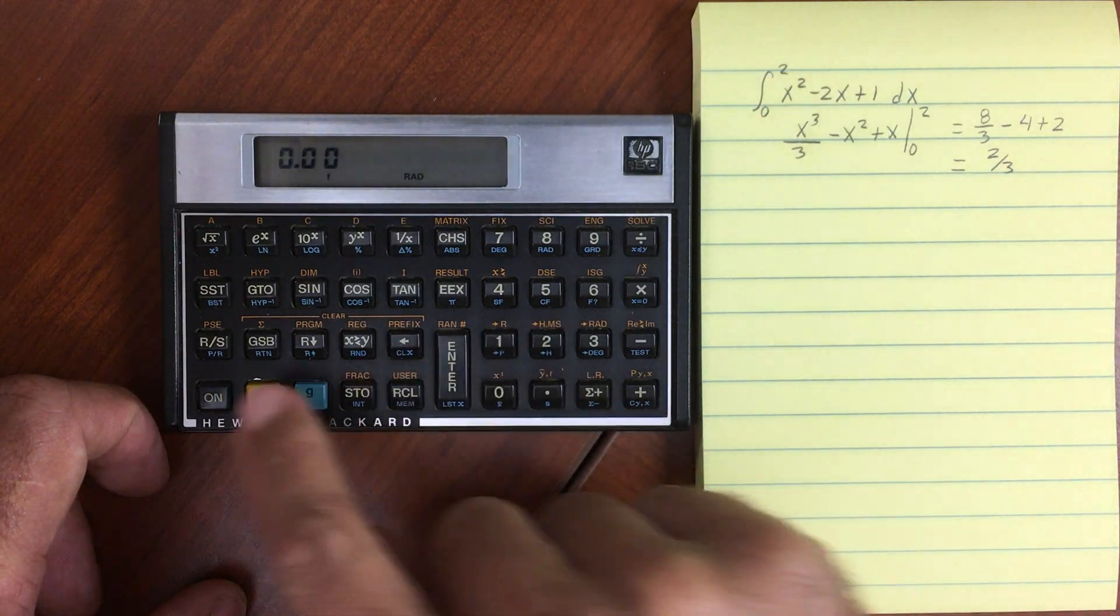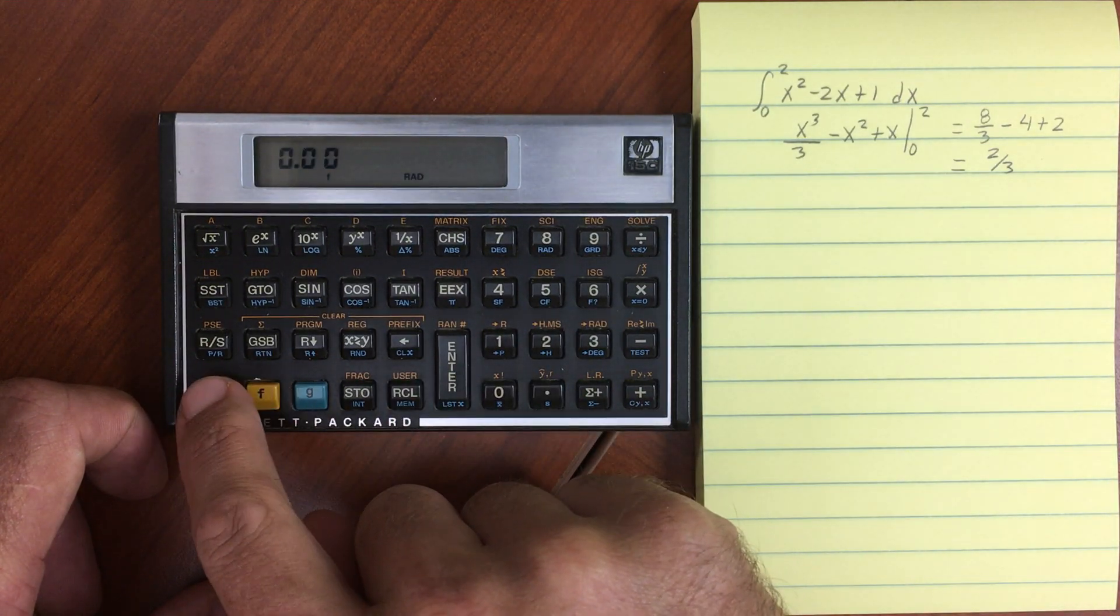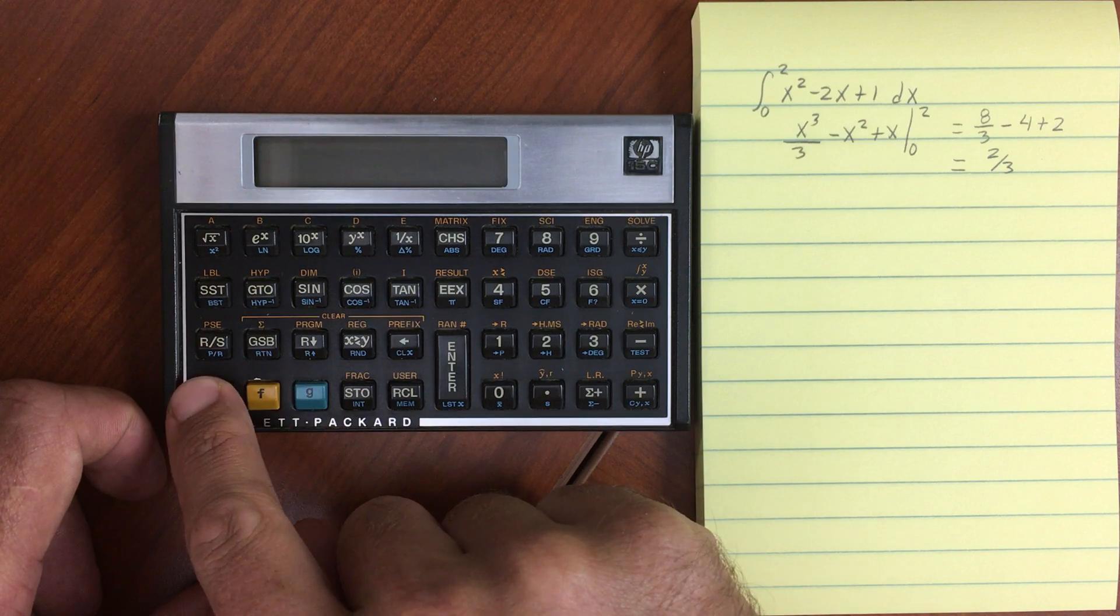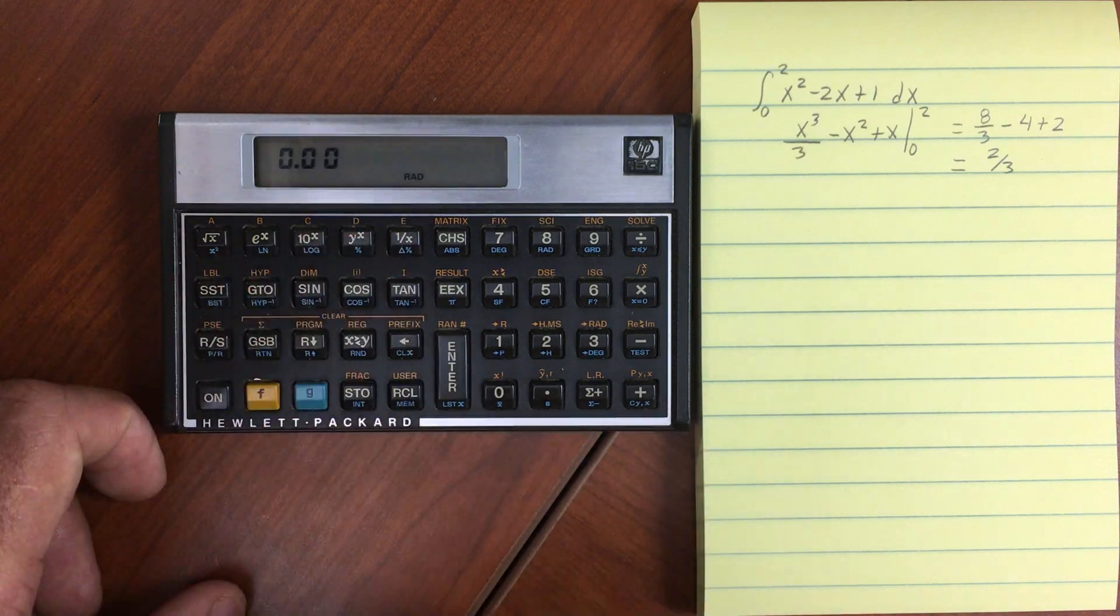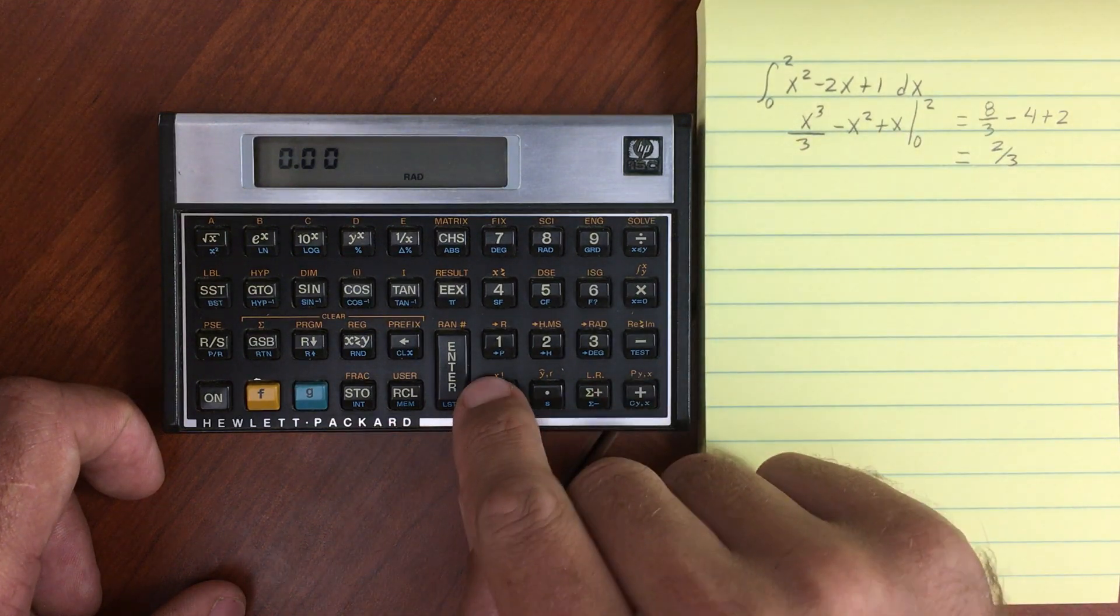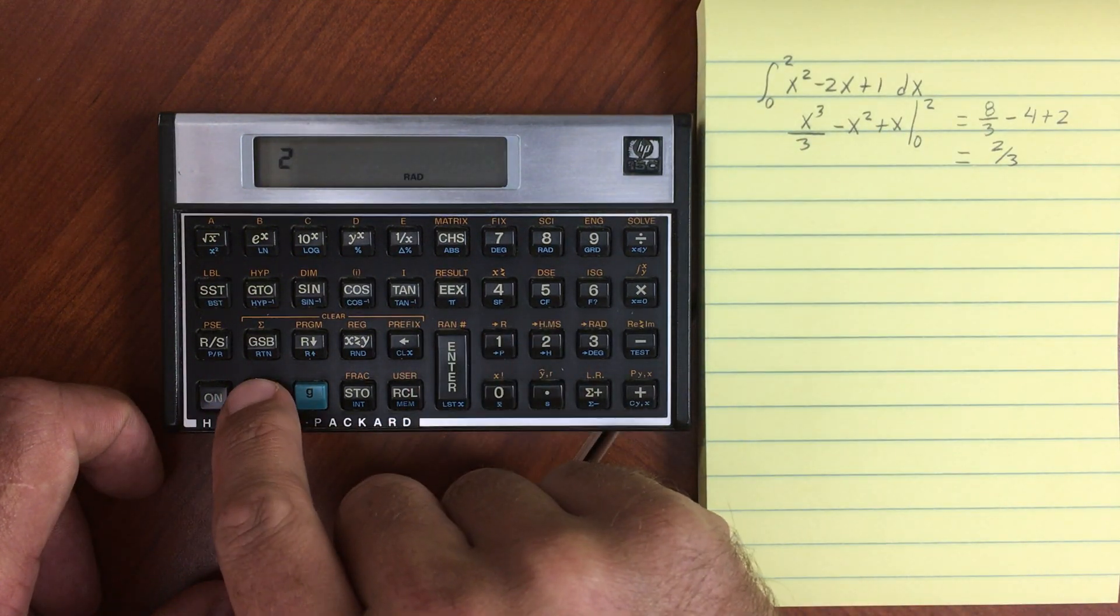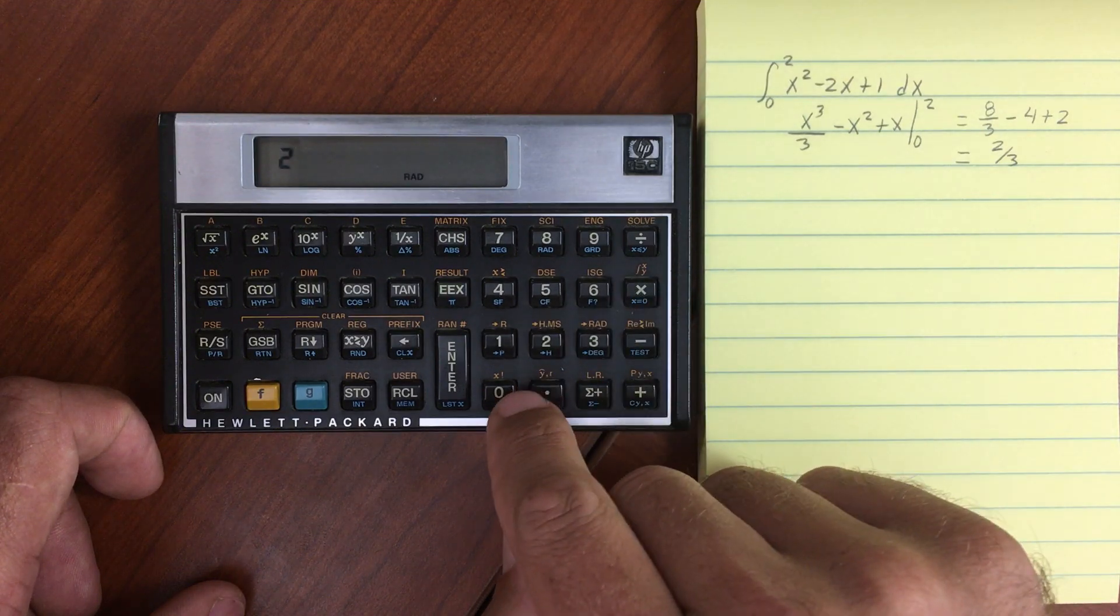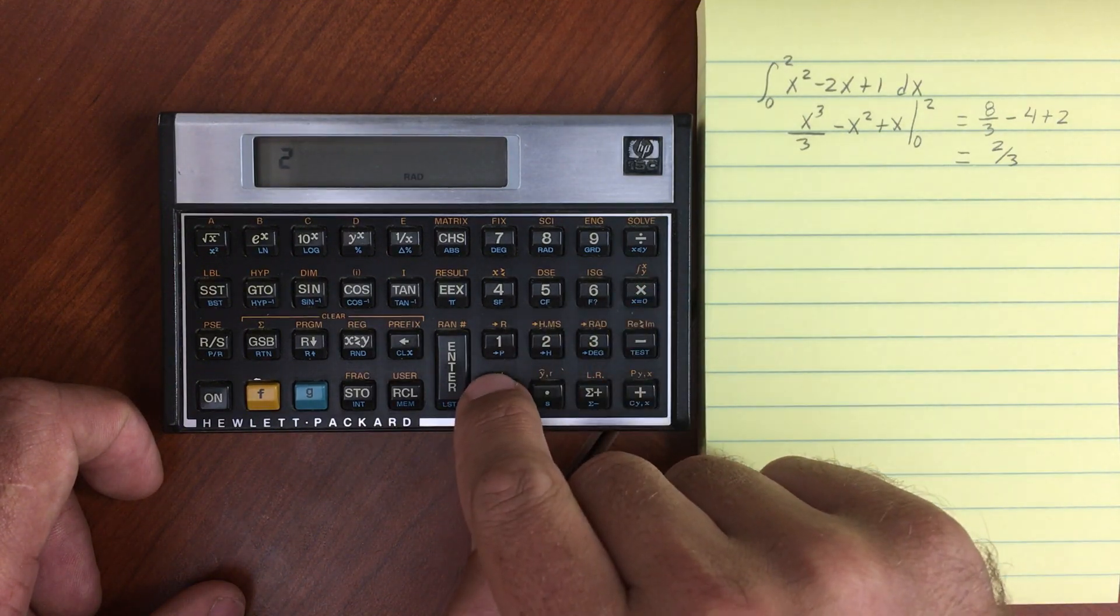Let me get rid of my F function. I need to enter in my limits, so zero and two. And then let's execute the integration and do zero.